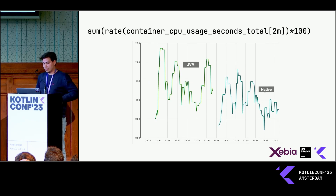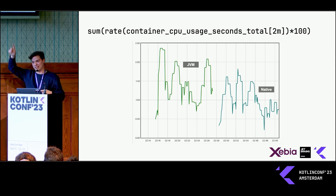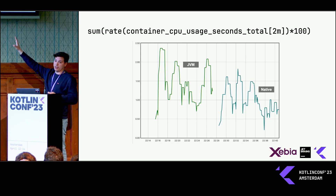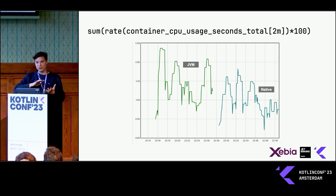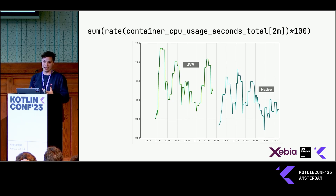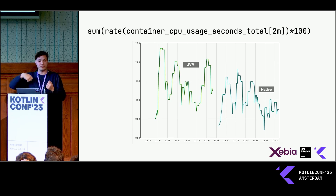For CPU usage, I ran the DDOSify tool a couple of times, and that's where you see those spikes. They show a very similar pattern, but the native one is pretty much below the JVM for this application. I tested it with another, more CPU-intensive application, and there you see that as the JVM warms up it actually overtakes native. So native could be very interesting if you have to do it once and then scale down to zero, or for a one-off task.